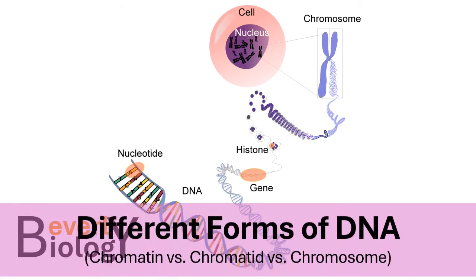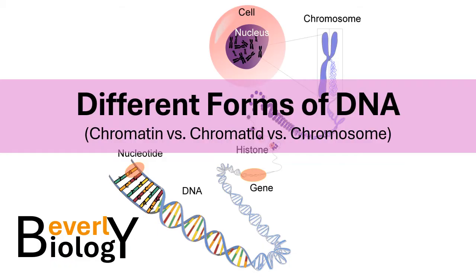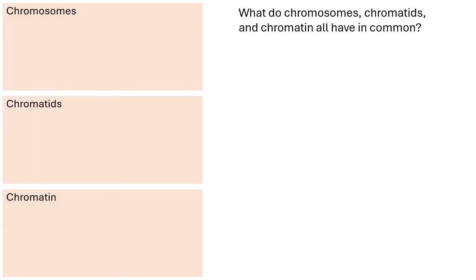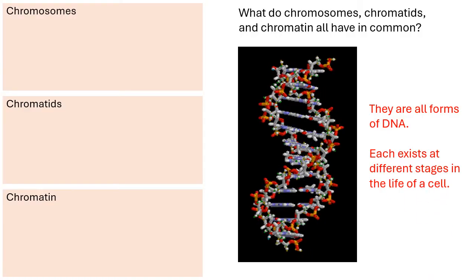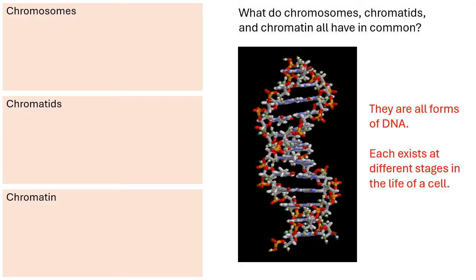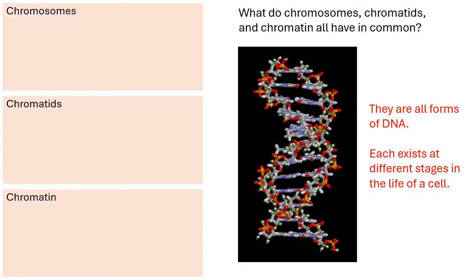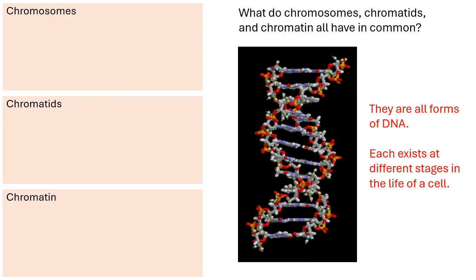The topic of this video is the different forms that DNA can be found within: chromatin versus chromatids versus chromosomes. What do they all have in common? Well, they're all forms of DNA — the double helix, the twisted spiral ladder. But each of these forms of DNA exists at a different stage in the life of a cell. Let's break it down and compare and contrast.